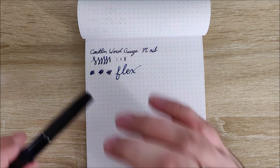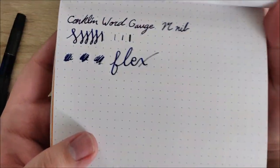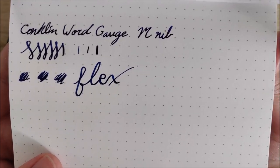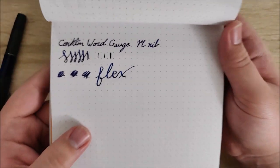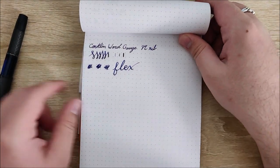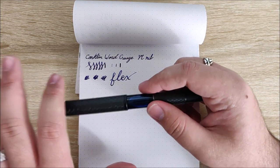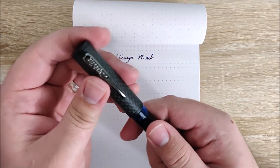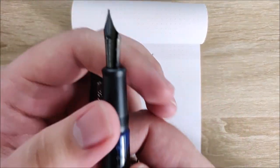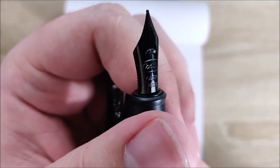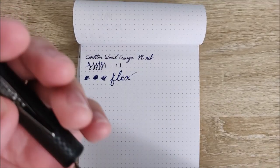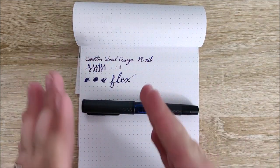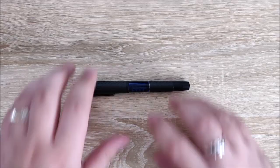You can kind of feel when you're going to push it too far, but you can get some very good line variation out of this. So if that's something that you're looking for, I would definitely keep this in mind. And I don't know if that's the case with all Conklin nibs, because the only other nib I've tried besides this one is the Duraflex nib, their OmniFlex nib. But I think it's because that little Crescent Moon cutout, I think that just gives it the extra little oomph that it needs so it can spread the tines and you can get some nice line variation in there.